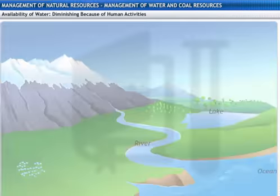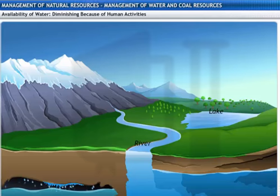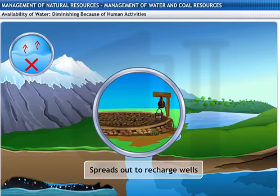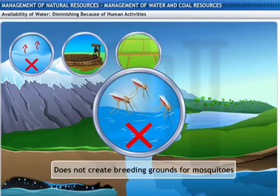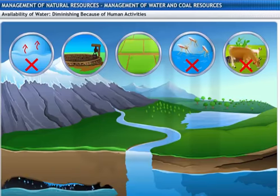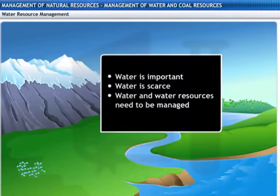These factors are even affecting groundwater reserves. Groundwater is especially important to conserve because of the following advantages: it does not evaporate; it spreads out to recharge wells; it provides moisture for widespread vegetation; it does not create breeding grounds for mosquitoes; and it is relatively protected from contamination of human and animal waste. Therefore, it is very important to manage our water resources well and preserve it.